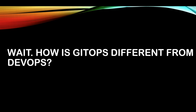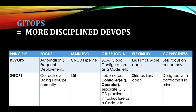This sounds very familiar to DevOps — isn't it DevOps after all? So how is GitOps different from DevOps? I would say GitOps is a more disciplined version of DevOps. Here's a table showing the difference between DevOps and GitOps in different categories. First, focus: DevOps is more about automation and frequent deployment, while GitOps is about correctness and doing DevOps correctly. The main tool for DevOps is the CI/CD pipeline, while GitOps always uses Git as the main tool.